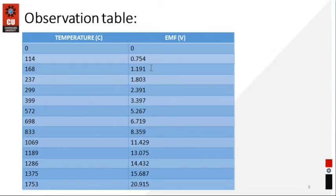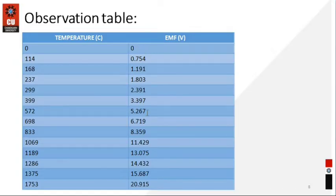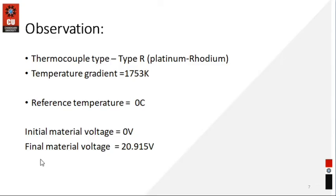This is our temperature observation table for the thermocouple type. Here you can see the EMF — how to take your reading. I already talked about this in the simulation part of the previous video. This is the EMF part and this is the temperature. The first part is our initial point and the last one is where 1753 is the temperature, at which value we have got 20.915 — this is our final point.